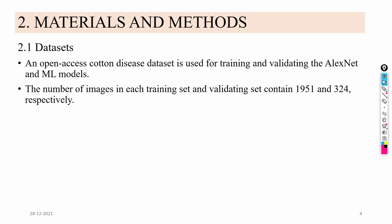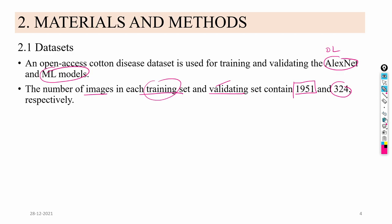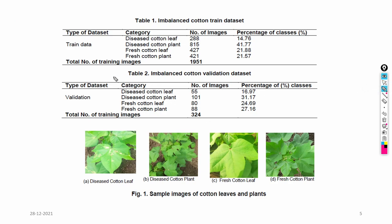For materials and methods: an open access dataset is used for training and validating the AlexNet and machine learning models. The number of images in the training set is 1951 images, and 324 images are used for validation. The training dataset contains four classes.